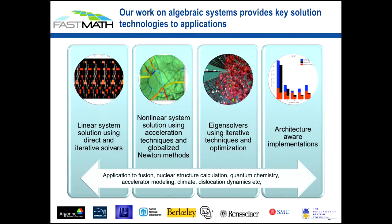On the linear system side, we're looking at both direct and iterative solvers — conjugate gradient methods, GMRES methods, the whole suite of tools. Nonlinear system solution uses various acceleration techniques such as Anderson fixed point and other globalized-type methods. For eigensolvers, we're looking at symmetric problems, non-symmetric problems, problems where you need to extract just one or two eigenvalues from a large system, and problems where you need to extract many eigenpairs. You need different kinds of solvers to address those different needs.